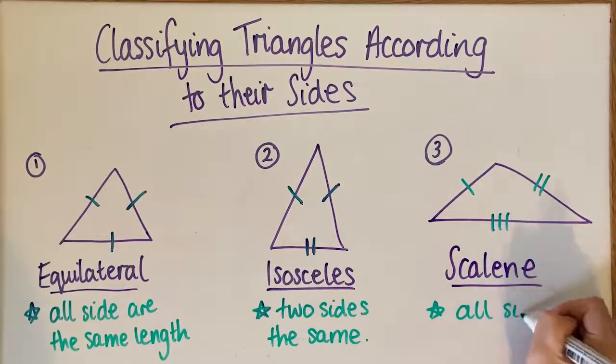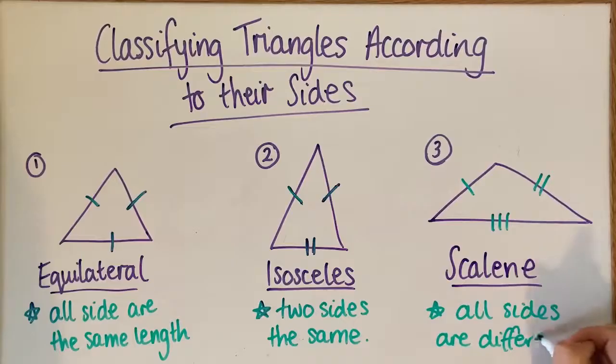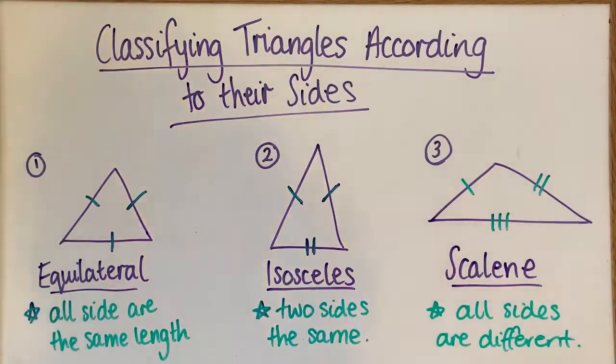So all sides are different, and that is the way that we classify triangles according to their sides.